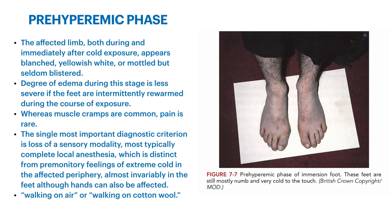Trench foot can be broken down into three phases: the pre-hyperemic phase, the hyperemic phase, and the post-hyperemic phase. The pre-hyperemic phase constitutes the affected limb during and immediately after cold exposure. It appears blanched, yellowish-white, or mottled — very seldom blistered. The degree of edema during this stage is less severe if the feet are intermittently rewarmed between periods of cold vasoconstriction. Muscle cramps are quite common and pain is rare, so soldiers often get cramps, stop for a break, try to rub and warm their feet, then resume marching.